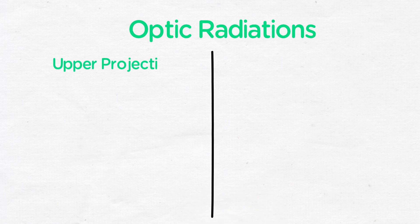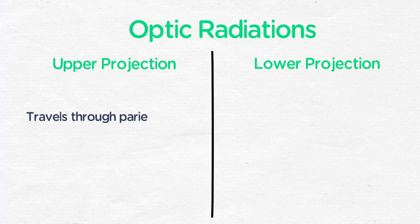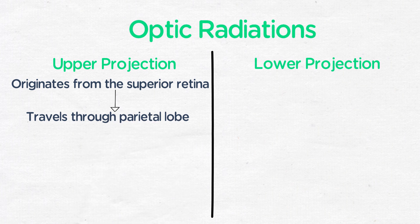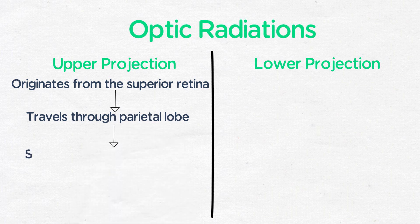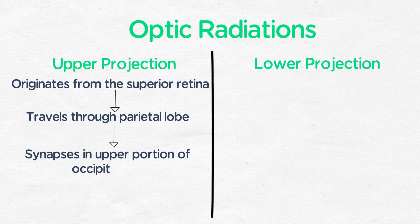The optic radiations have an upper and a lower projection. The upper projection travels through the parietal lobe and carries visual input from the superior retina. This represents the inferior visual fields and synapses in the upper portion of the occipital lobe.